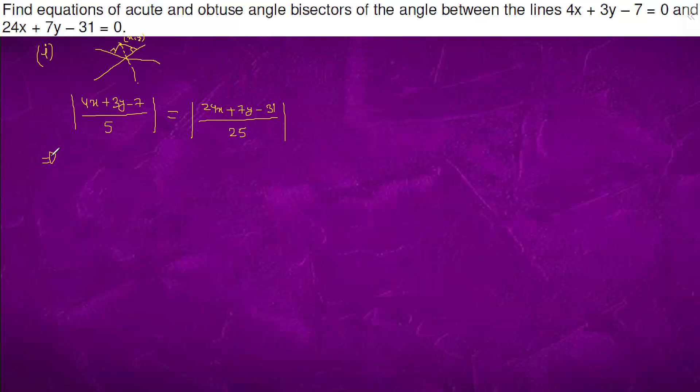So, what will happen, something opening with plus. This is a1, this is b1, this is a2, this is b2. If a1a2 plus b1b2 is positive then obtuse.